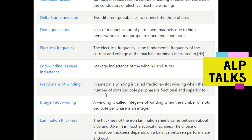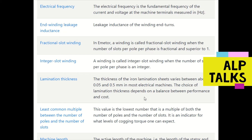Integer slot winding is a winding where the number of slots per pole per phase is an integer — it should be a whole number like three, four, or five.